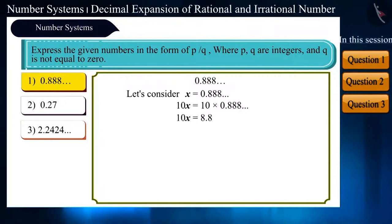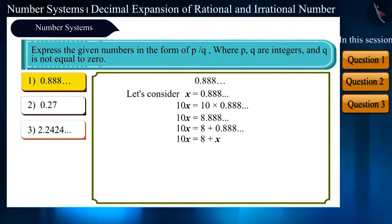After multiplying, we get 8.888. That is, the decimal went one step to the right. Now, we can also write it as 10x is equal to 8, plus 0.888. We have assumed 0.888 as x. Therefore, it will be, 10x is equal to 8 plus x. 10x minus x is equal to 8. After solving this further, we get x is equal to 8 by 9.